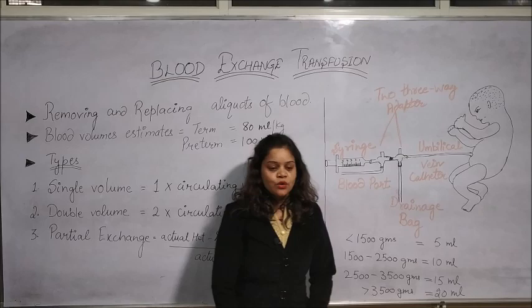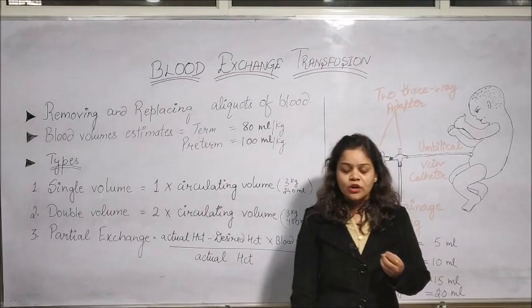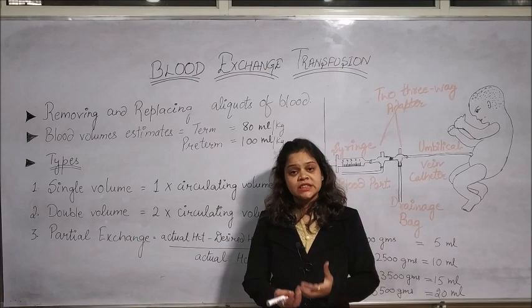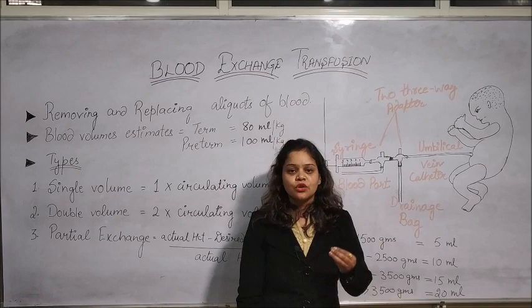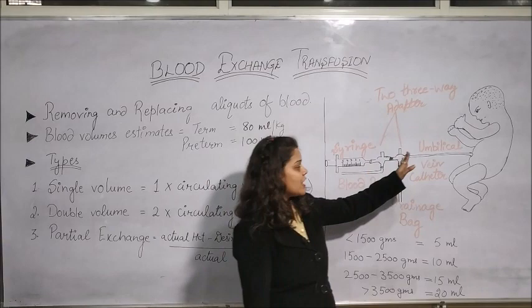Before performing this procedure, we should take the vital signs of the baby and record all important information like pre-procedure serum bilirubin levels. We should also know the SpO2 of the baby, and the general condition of the baby should be maintained. For the procedure, we need an umbilical vein catheter and two three-way adapters.